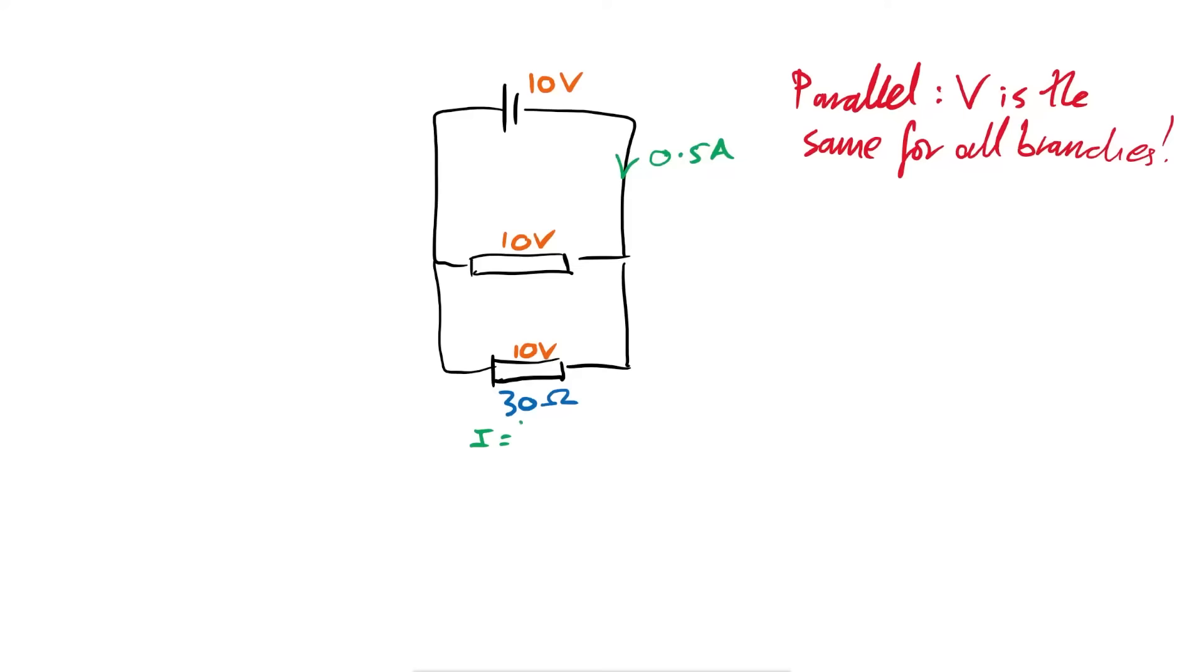The current is going to be equal to V divided by R, rearranging Ohm's law again. So that's equal to 10 divided by 30. And that gives me, well, let's just say 0.33 amps. So now I know that there's a current of 0.33 amps going through the bottom branch.